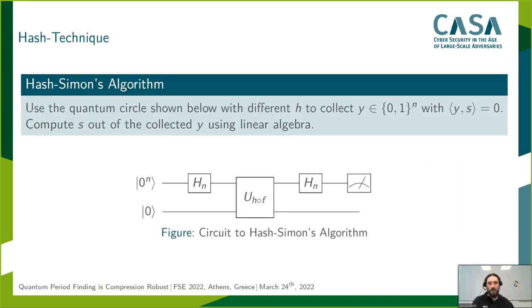Our hash algorithm thereby is almost the same as our original algorithm. Again, we use a similar circuit to collect the y's orthogonal to s. The only difference is that the embedding of f is in each iteration replaced with the embedding of a different hashed version of f. We have shown in our paper that we still only measure y's that are orthogonal to s, as well as that the algorithm still works with a constant factor of overhead.